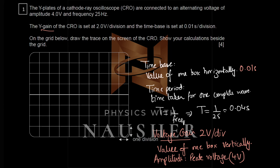Starting from the mean line, go two boxes above, come back, go two boxes below, then come back — that traces one complete waveform. Join the points to get the waveform and repeat. You should finish exactly at the correct point. This gives an amplitude of four volts, since one box equals two volts.